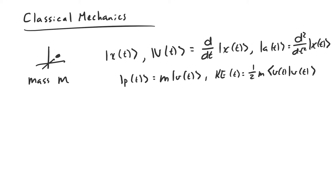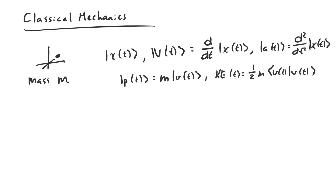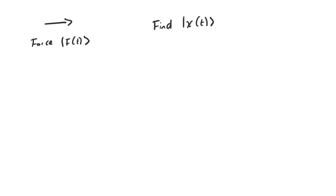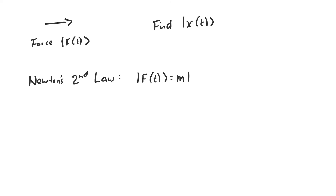So this is the game of classical mechanics: find the position for all times. Usually we know m — it's constant in time — and we know the force acting on the system at all times. The way we do this is by using Newton's second law, which relates the force acting on the system and the position. Specifically, it says that the force is equal to the mass times the acceleration, which is the second time derivative of the position.